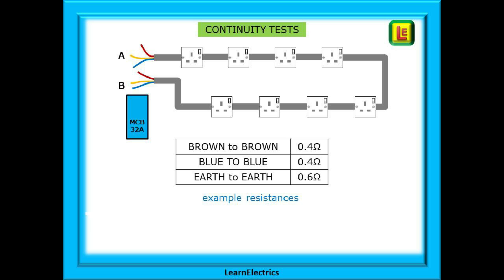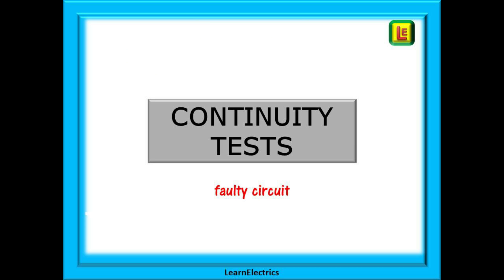The table here shows the sequence and some possible results for a good circuit. Test end-to-end between the brown of cable A and the brown of cable B—0.4 ohms may be a typical reading. It depends on the actual length. You should get a similar reading when testing end-to-end between the two blues. They are the same size cable and they travel the same route as the brown. The earth cable is smaller in size and you should expect a higher reading when tested end-to-end. For 2.5 millimeter twin the earth, this will be about 1.6 times bigger than the brown to brown reading. We're looking for balance between the conductors: brown and blue should be about the same and the earth slightly higher.